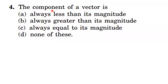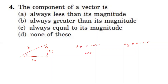Fourth question: the component of a vector. Consider vector A with x-component and y-component. If the angle is theta, then Ax = A cos θ and Ay = A sin θ. We know that cos θ and sin θ are each less than or equal to 1 and greater than or equal to −1. Therefore Ax lies between −A and +A, and similarly Ay lies between −A and +A.